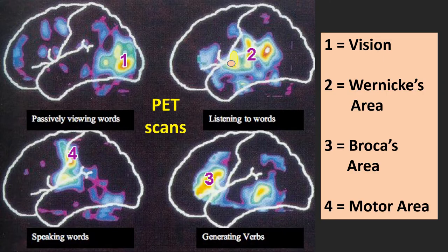A PET scan is a technique that shows brain activity while a person is doing something. Here we have four PET scans. Upper left: a person just looking at words, showing activity in the visual area. Upper right: a person listening to words, showing activity in the temporal lobe, the auditory processing area. Lower left: a person speaking words, showing activity in the motor cortex. Lower right: a person generating verbs — thinking of verbs — and we see a lot of activity in Broca's area.